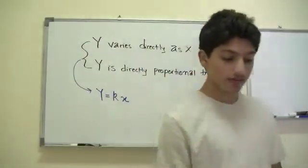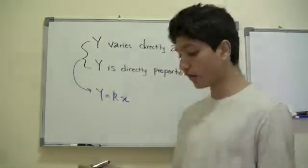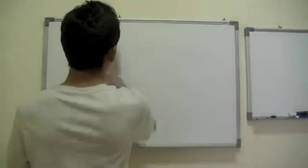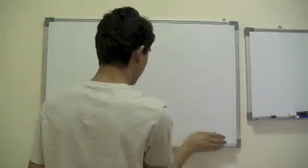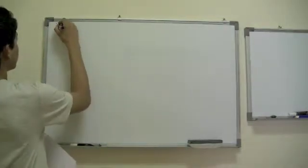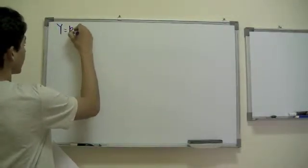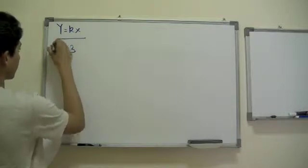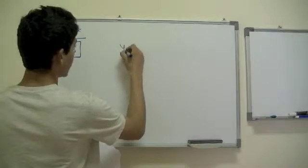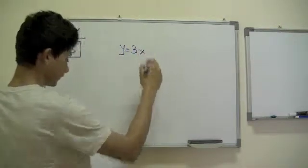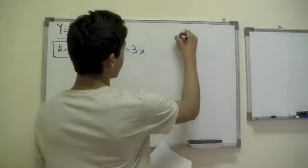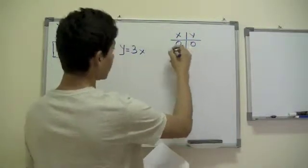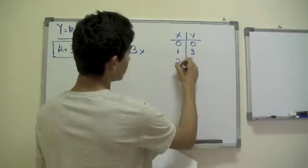Let's say k is equal to 3. Since y is equal to some constant times x, if we take the constant as 3, we build the equation y = 3x. If you plug in 0 for x, we get 0. If you plug in 1, we get 3. If you plug in 2, we get 6.